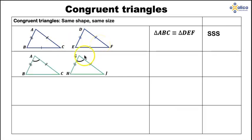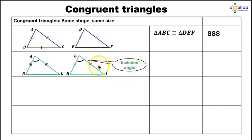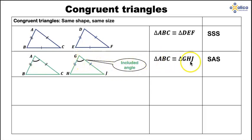Suppose we now look at the case of two sides that match and one angle that matches. It was found that this case can mean congruency, but only if it is the included angle — the angle must be the angle between the two sides. If it is the angle between the two sides, where the two sides meet, then yes, the two triangles are congruent and we call it side, angle, side, because it is the included angle.